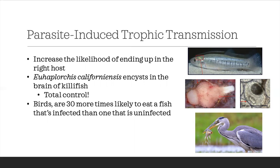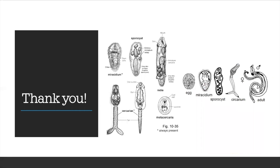For example, Euhaplorchis californiensis is a common type of trematode in California, and this is the one that encysts on the brain of killifish, which is the fish species we see here. When a fish has this parasite in its brain, the parasite would take full control of the fish. And instead of having the fish swimming kind of low in the water where it's safe, it makes the fish swim closer to the surface of the water, flashing its white belly to send a morse code to the bird saying 'eat me, I'm easy prey.' In fact, birds are 30 times more likely to eat a fish that's infected than one that is uninfected. In the end, the fish is eaten by the definitive host, which is the bird, the parasite reproduces inside the definitive host, and the cycle essentially starts again. Thank you for listening to this presentation.